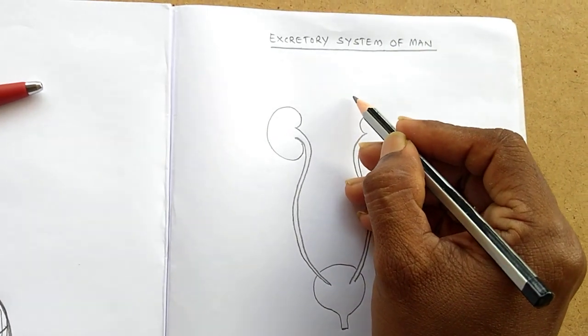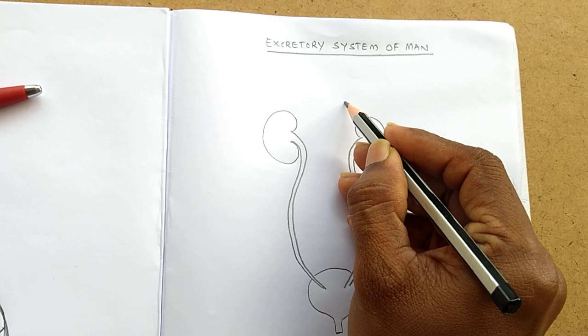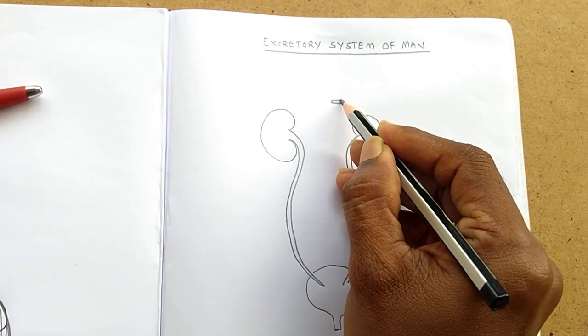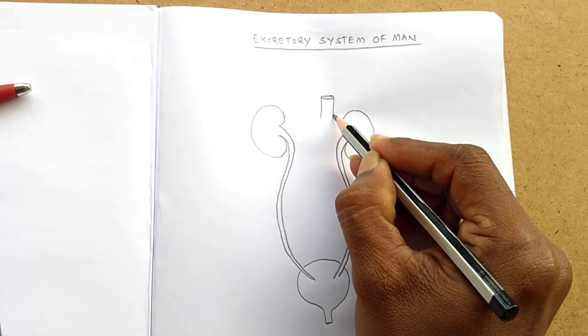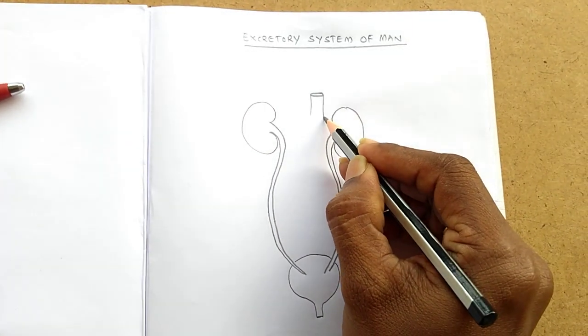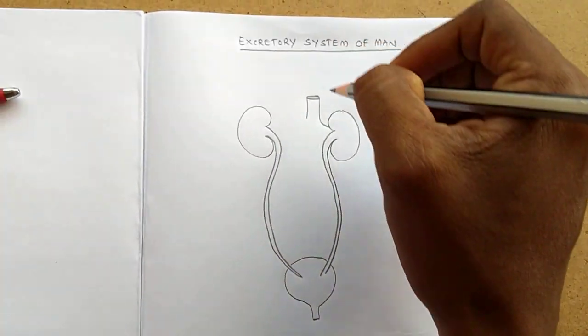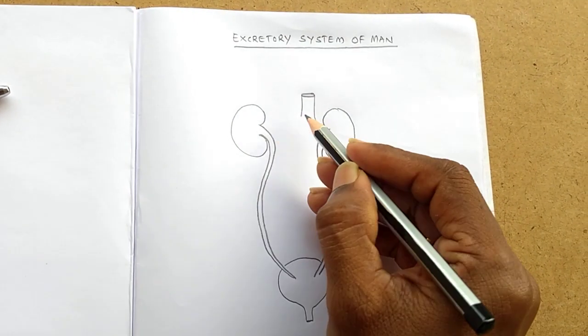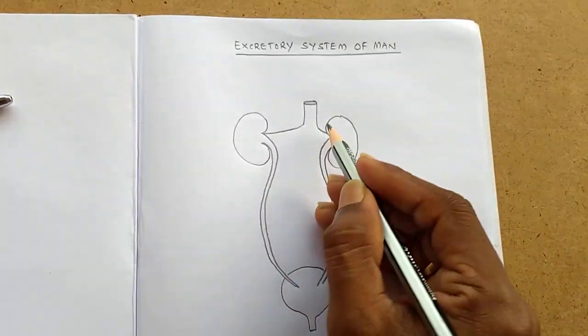After this, we have to draw the blood vessels which supply blood to the kidneys. Two major blood vessels are there. The first one is the aorta. It is a vessel from the heart, and we have to draw the branches from this aorta.